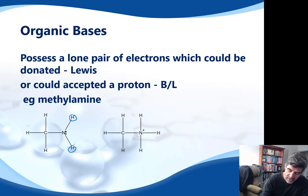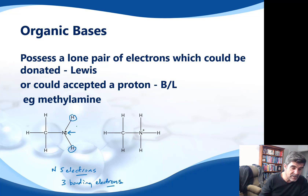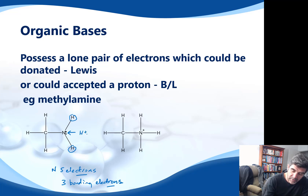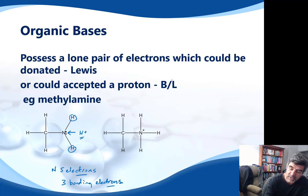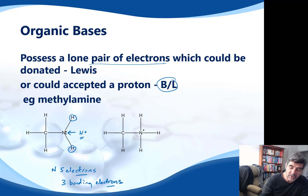One important thing to remember about nitrogen is that it has five electrons in its valence shell. Three of those electrons are bonding electrons, which means we have two electrons that form a lone pair — two electrons that don't get involved in bonding. This means there is a possibility of attracting something like a proton. If nitrogen is capable of accepting a proton, it falls within the Bronsted-Lowry definition of a base. The lone pair of electrons which could be donated to another species also means it falls into the Lewis definition of a base — it is a Lewis base.